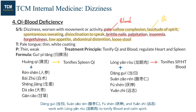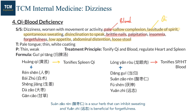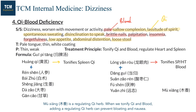Dang Gui, Suan Zao Ren, Fu Shen, and Yuan Zhi work with Long Yan Rou to tonify blood and calm the spirit. Suan Zao Ren is a sour herb that can inhibit sweating, and Yuan Zhi is beneficial for forgetfulness. Mu Xiang is a qi-regulating herb. When we tonify qi and blood, adding a qi-regulating herb can prevent bloating and nausea.